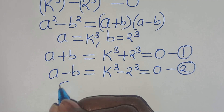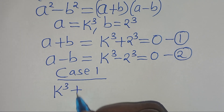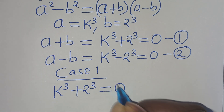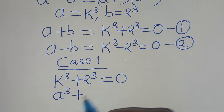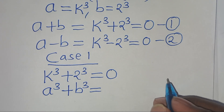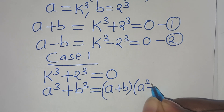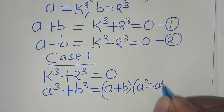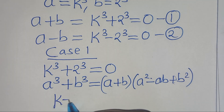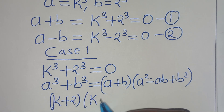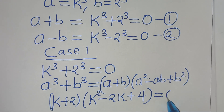Let's solve equation 1, case 1. From case 1, we have k to the power of 3 plus 2 to the power of 3 equals 0. This is the sum of two cubes, expressed as a to the power of 3 plus b to the power of 3, which can be factored as (a + b)(a squared minus ab plus b squared). Applying this identity, we have k plus 2, multiplying by k squared minus 2k plus 2 squared, which is 4, this is equal to 0.